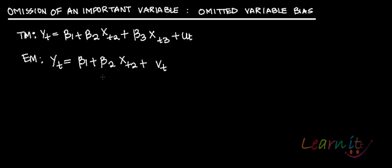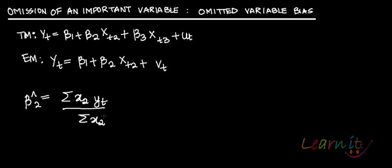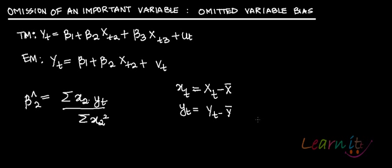The OLS estimate of the estimated model — for example, β̂₂ — would be equal to summation of x₂ Yt upon summation of x₂ squared, in deviation form, where xt is Xt minus X̄ and Yt is Yt minus Ȳ. And β̂₁ is Ȳ minus β̂₂ X̄₂.